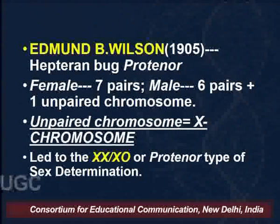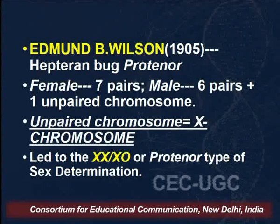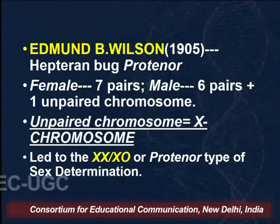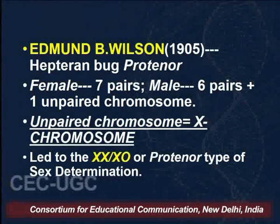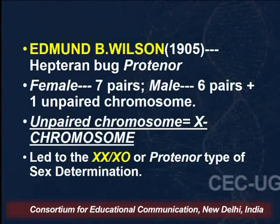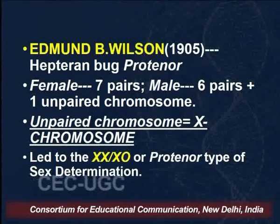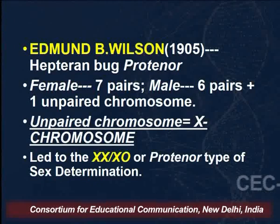Then came the classical work of Edmund Wilson, working on the Hemipteran bug Protonor. As you can see on your screens, the female of Protonor has seven pairs and the male has six pairs plus one unpaired chromosome. That means the male has one chromosome less — X — and this unpaired chromosome was called the X chromosome. This was the first sex chromosome to be discovered, leading to the naming of a type of sex determination: XX/XO, also nicknamed the Protonor type.